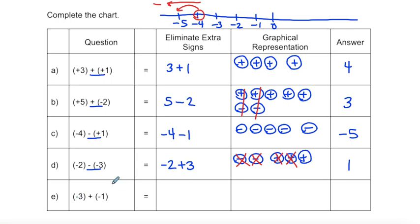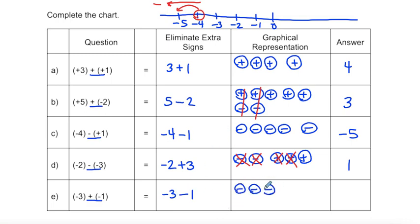Example E: starting with negative three, keeping the negative sign out front. Looking at the signs directly beside each other — a plus and a minus, one of each — so that's a minus, giving negative one. So I have negative three and negative one, and that gives me negative four.